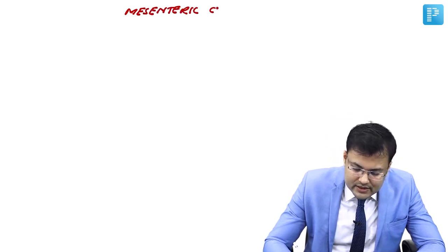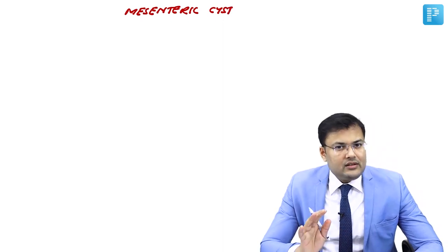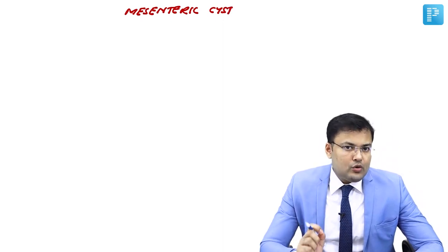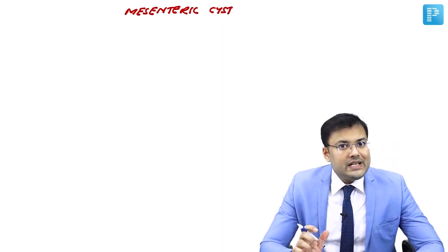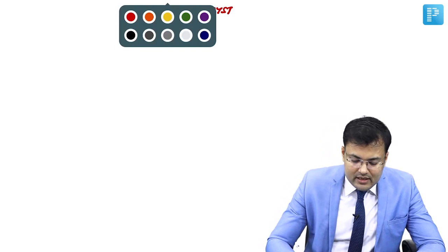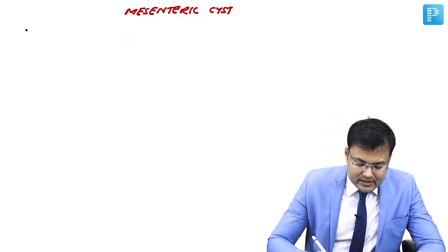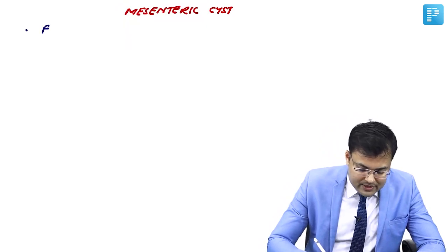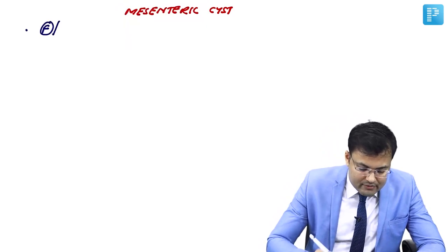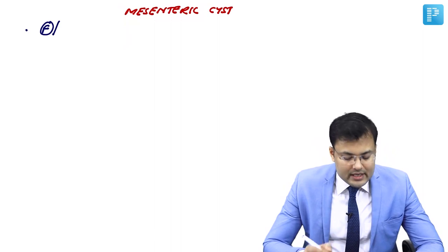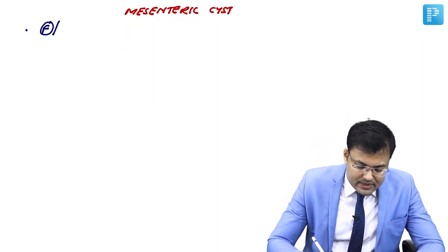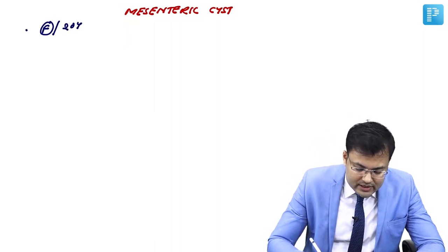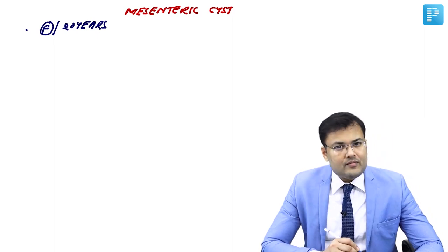The first question: where is the cyst? In this case the cyst is located in the mesentery. Mesenteric cyst is more common in females, and in which particular age group? These females are in the second decade, so generally the age is approximately near 20 years.